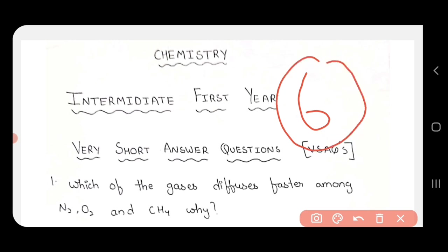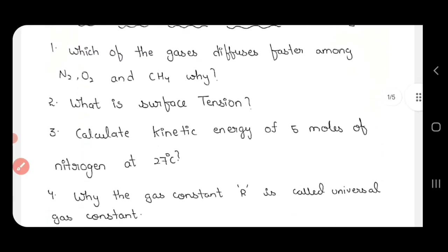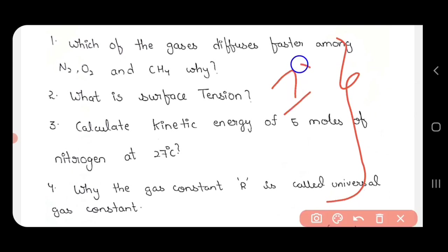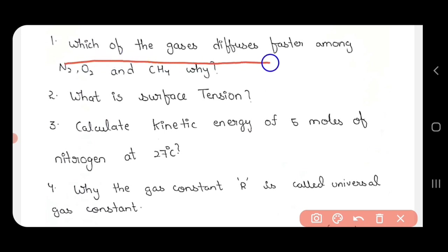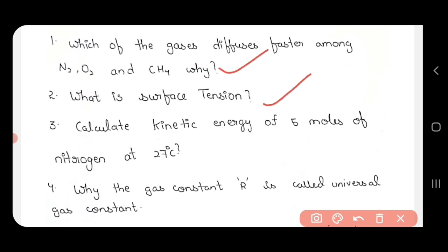So VSAQs — expect to do a lot of these. We will cover long and short video about the max, chemistry, botany, zoology, etc. Click the description link to our channel. Subscribe and share with friends. For the first four VSAQs, example questions include: which gas diffuses faster among N2, O2, and CH4? What is surface tension? Calculate the kinetic energy of 5 molecules of nitrogen at 27 degrees Celsius.